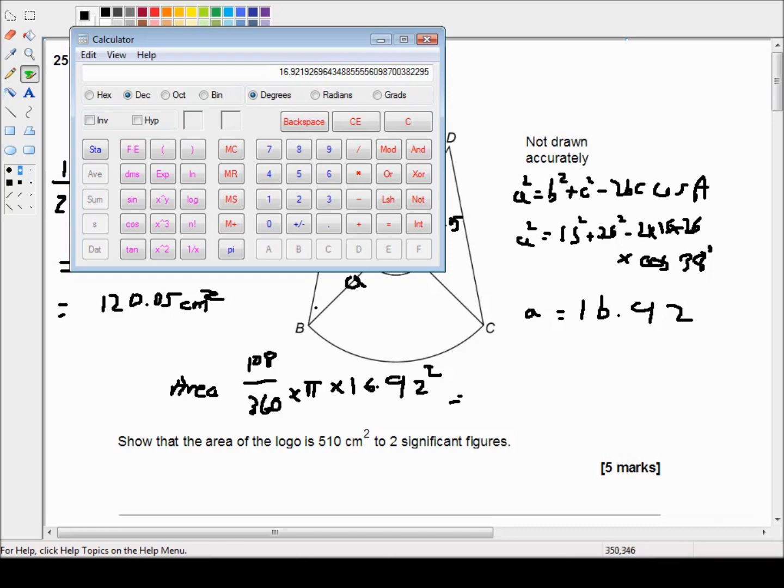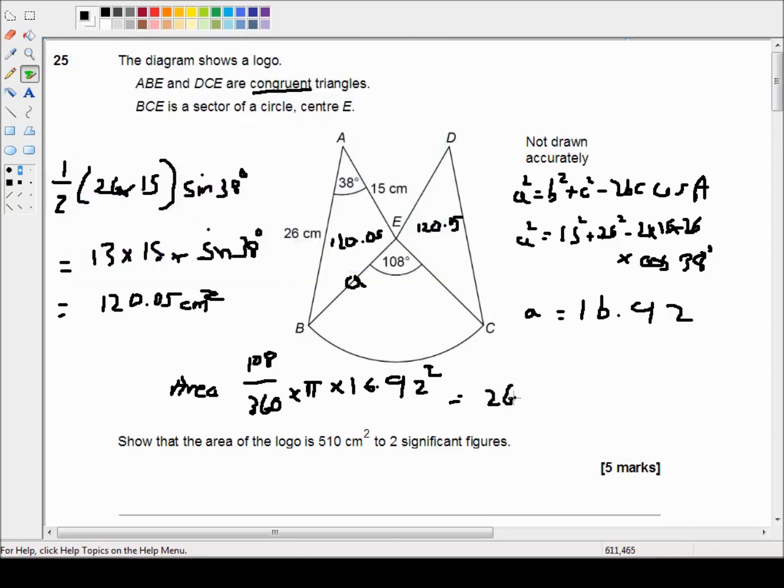So I've got my r squared, I'm just going to multiply it by pi. And now I'm going to multiply by 108 and divide by 360. And that gets me 269.88 centimeters squared.